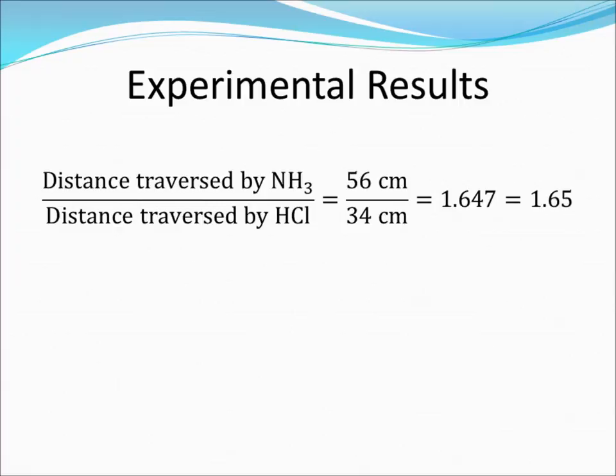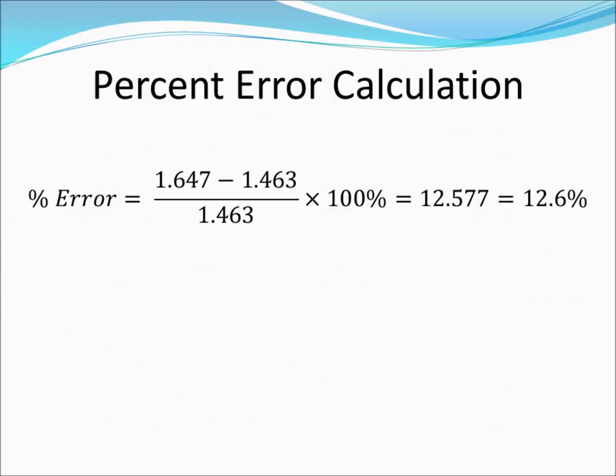The ring is very easy to see now. So we will place the meter stick along the tube and see that the ring is forming at about 56 centimeters or so. So the gaseous ammonia traveled 56 centimeters and the gaseous hydrogen chloride traveled 34 centimeters. Thus, the ratio of the distance traveled by ammonia to the distance traveled by hydrogen chloride is 1.65. Compared to our theoretical calculation, we get a percent error shown on the next slide of 12.6%.